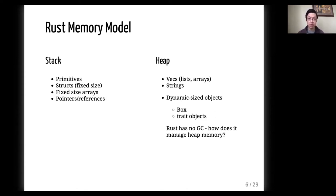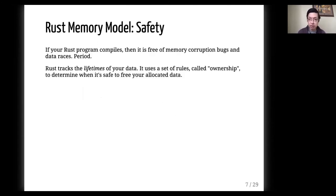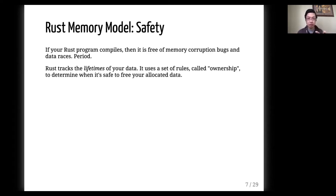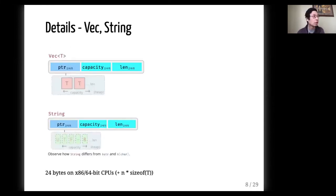Rust does not have a garbage collector, so how does it manage memory? This is a really important point, especially for those coming from dynamic languages — it's the biggest differentiator about Rust. What Rust promises is that even though it does not have a garbage collector, it will track how your data is used through a concept known as a lifetime. It keeps track of when your data is created, when it is borrowed and used, and tries to prevent unsafe use and sharing of your data. It also tracks when your data is no longer used, so it knows when to free it.